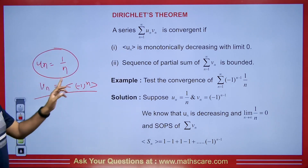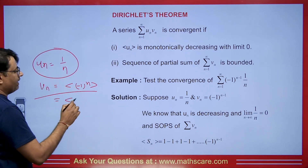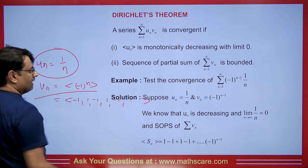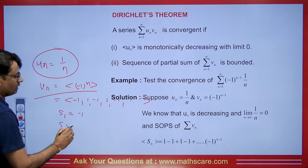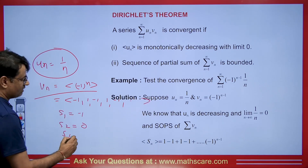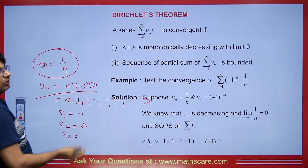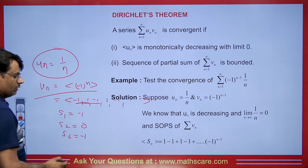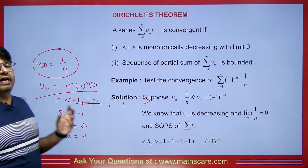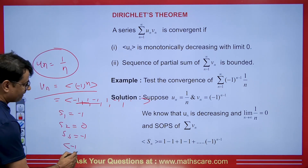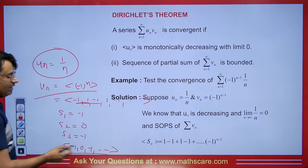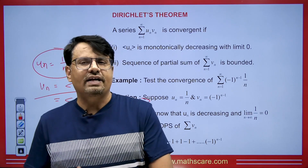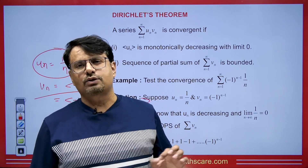If we discuss the partial sums (SOPS) of vn, we get the terms as −1, 1, −1, 1, −1, 1, and so on. So S1 = −1, S2 = 0, S3 = −1, and in this manner the SOPS alternates as −1, 0, −1, and so on. This sequence of partial sums is bounded, with range between −1 and 0. Hence, the partial sums are bounded, meaning the SOPS we get will be bounded.